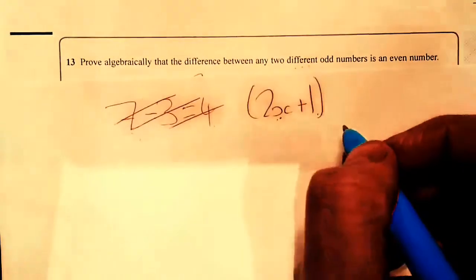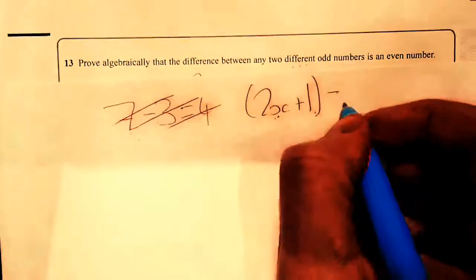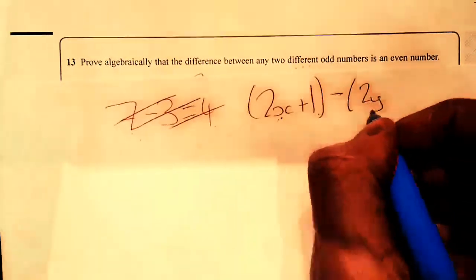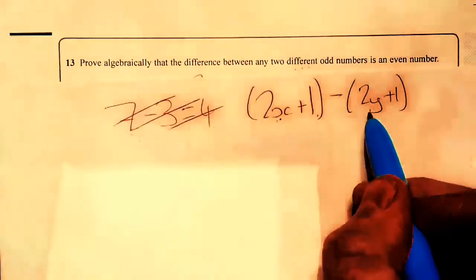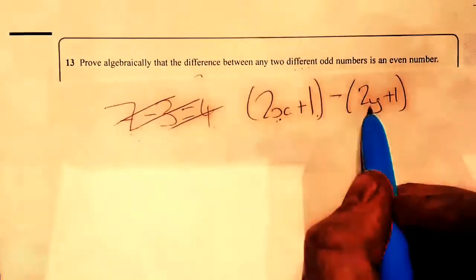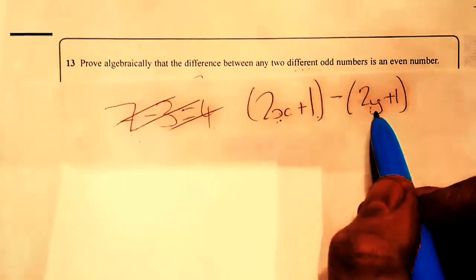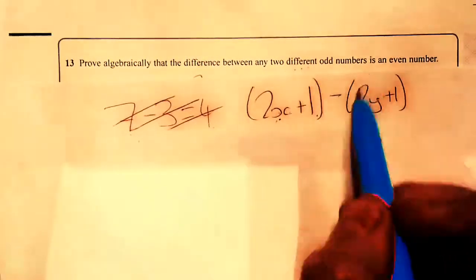Now I'm going to put in brackets just to represent the first odd number. Differences subtract. And my second odd number, I'm going to write exactly the same thing, but I'm going to use y. I can use whatever variables I want, it really doesn't matter. I have to use a different one because they're different odd numbers.